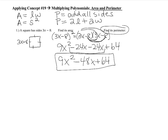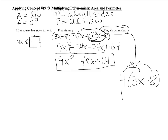Now find the perimeter. The perimeter is the distance all the way around. Since all four sides are 3x minus 8, you can write 4 times (3x minus 8) and distribute the 4 to get 12x minus 32.